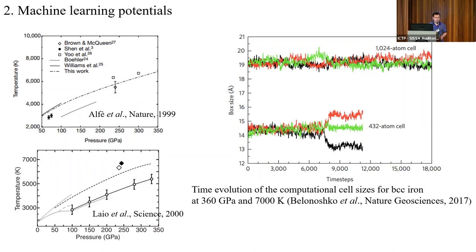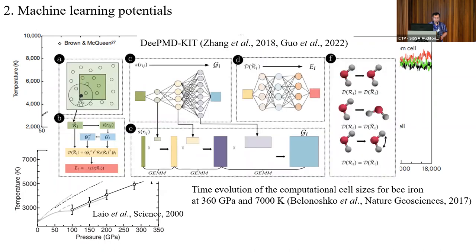We might wonder whether the simulation results are converged with respect to the number of atoms. We couldn't use ab initio molecular dynamics anymore because it's very expensive. So for this we use machine learning potentials. In this study we chose the DeePMD-kit package to develop our machine learning potentials. What makes this package different from others is the structural descriptor, shown in figure (b). For more details you can read the original paper by Lin-Feng Zhang and their latest review paper.